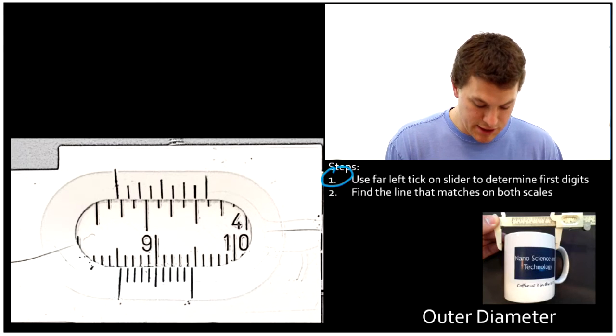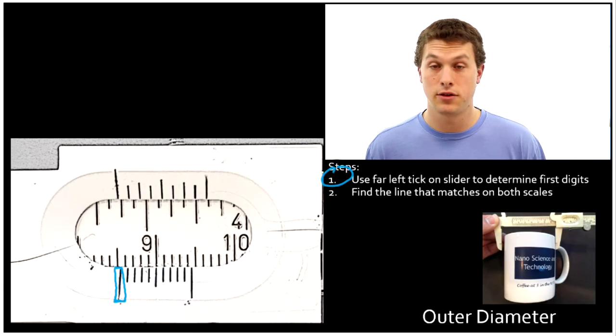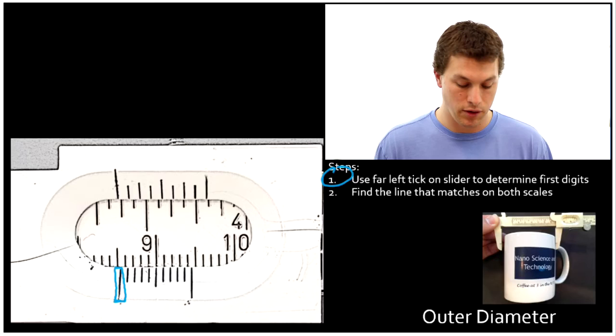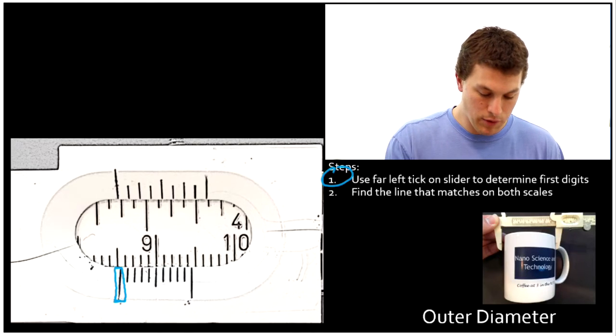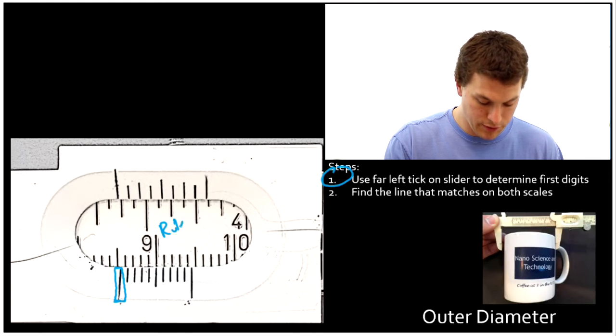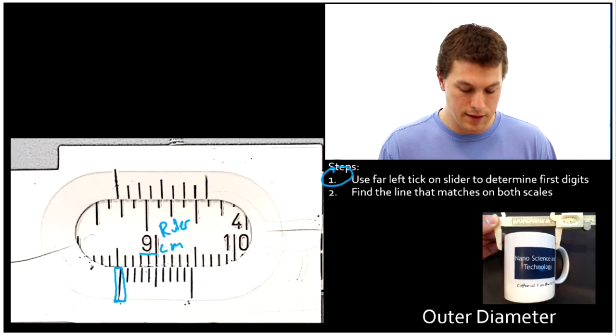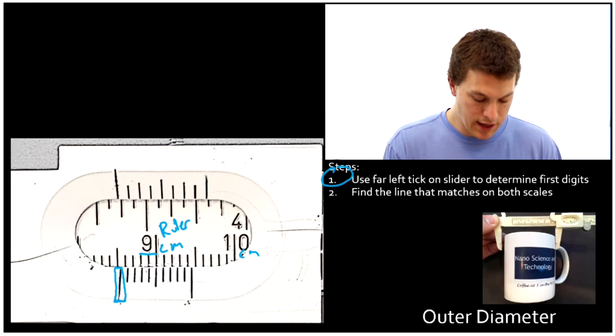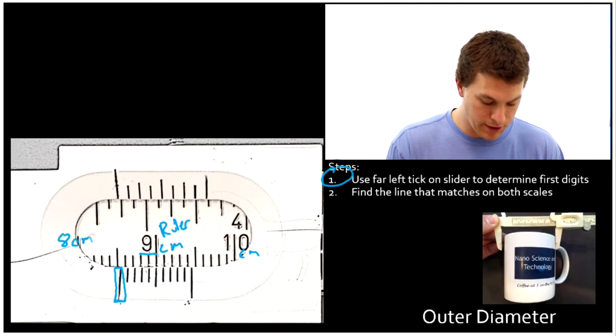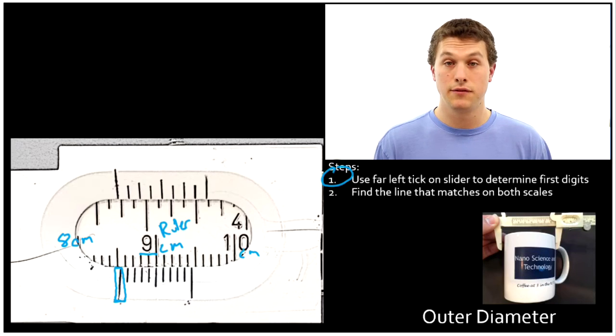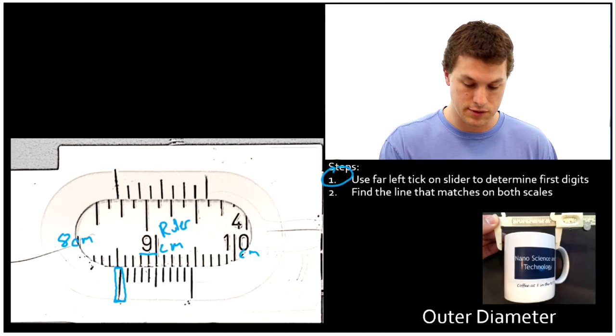For step one, we're going to look just at this leftmost tick here. The other ticks don't matter on the vernier scale, and we're going to see where it lines up on our ruler. Notice that this guy is nine here, and that's actually nine centimeters, and then we have ten centimeters over here. That means right here, even though we can't see it, we have eight centimeters, and that's important to see if you want to make the reading of your first few digits correctly.